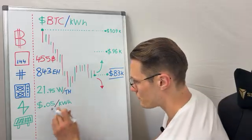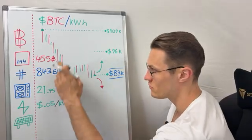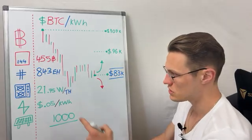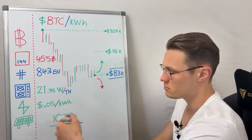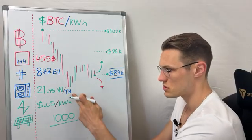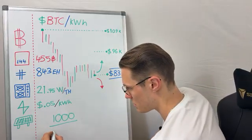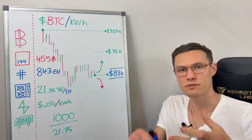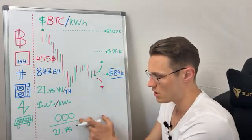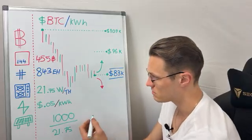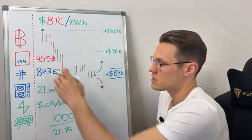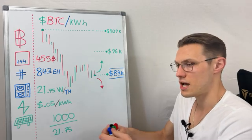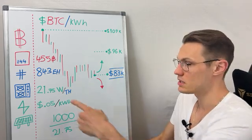These are all mathematically connected, so I'll write out the formula. A kilowatt is 1,000 watts. If this computer is consuming 21.75 watts per terahash, we divide 1,000 by 21.75, which tells us we're making about 46 terahash per kilowatt. Now, 46 terahash earns a certain amount of Bitcoin, and this is where hash price comes in. Hash price is essentially how much Bitcoin you can earn per terahash of compute per day.